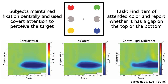It's easier to see this in a contralateral minus ipsilateral difference plot. We've boosted up the scale on the difference plot, and you can clearly see a suppression at around 10 Hz that starts around 200 ms after stimulus onset and continues at least 800 ms. And it was a relatively narrow band of frequencies, so it's probably a bona fide oscillation.